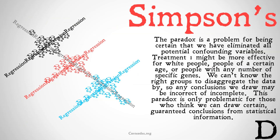The paradox is a problem for being certain that we have eliminated all potential confounding variables in a data set. Treatment 1 might be more effective for white people, people of a certain age, or people with any number of specific genes. We can't know the right groups to disaggregate the data by, so any conclusions we draw may be incorrect or incomplete. This paradox is only problematic for those who think we can draw certain guaranteed conclusions from statistical information, and it's an epistemic paradox that supports the skeptic's position — that maybe we should be suspicious of drawing certain conclusions from statistical information because we may not have enough information to be confident we have controlled for all the confounding variables.